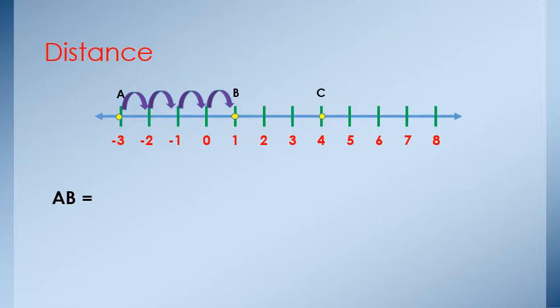Then the distance AB equals 4 units. Our rule to find any distance between two points: take the absolute value of the difference. Absolute of 1 minus negative 3, or negative 3 minus 1, equals 4 units.